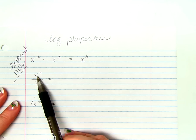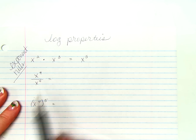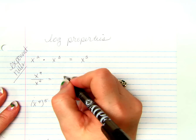If we are dividing like bases, what do we do with our exponents? Mm-hmm, subtract.